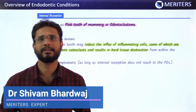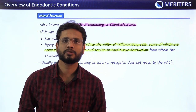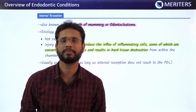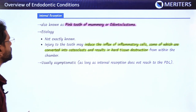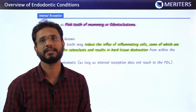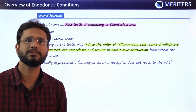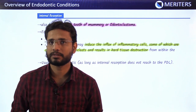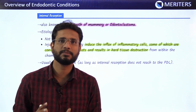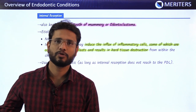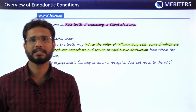We will have an overview of various endodontic conditions which can be asked in the exam. The most frequently asked topic we are discussing first is internal resorption. Internal resorption means the tooth is resorbed from inside — from pulp towards the outside. Another type is external resorption, where the tooth is resorbed from outside — from enamel or cementum towards the pulp. This is the basic difference.